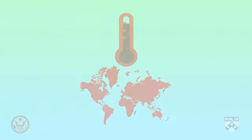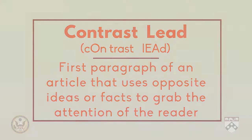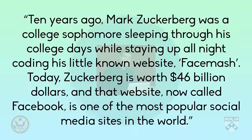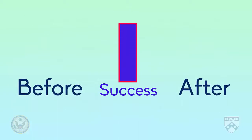The third type of lead is the contrast lead. In this type of lead, the author uses opposite ideas or facts to grab the reader's attention. Here's an example. Ten years ago, Mark Zuckerberg was a college sophomore sleeping through his college days while staying up all night coding his little-known website, FaceSmash. Today, Zuckerberg is worth $46 billion, and that website, now called Facebook, is one of the most popular social media sites in the world. The author contrasts Mark Zuckerberg's life before and after his success to try to excite the reader into reading the rest of the article.